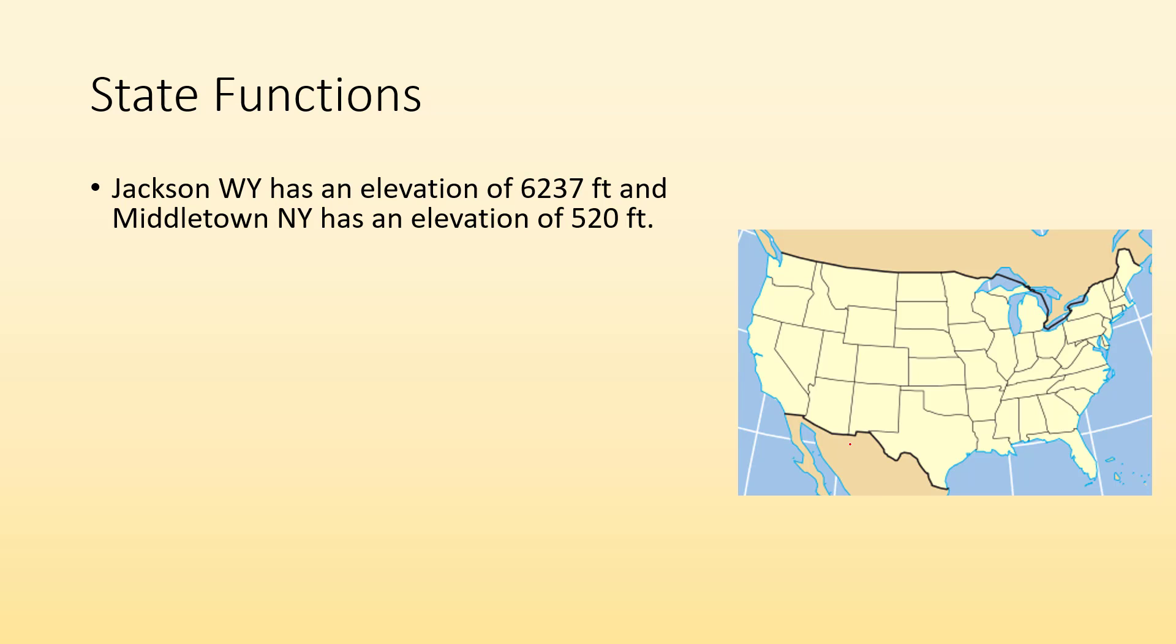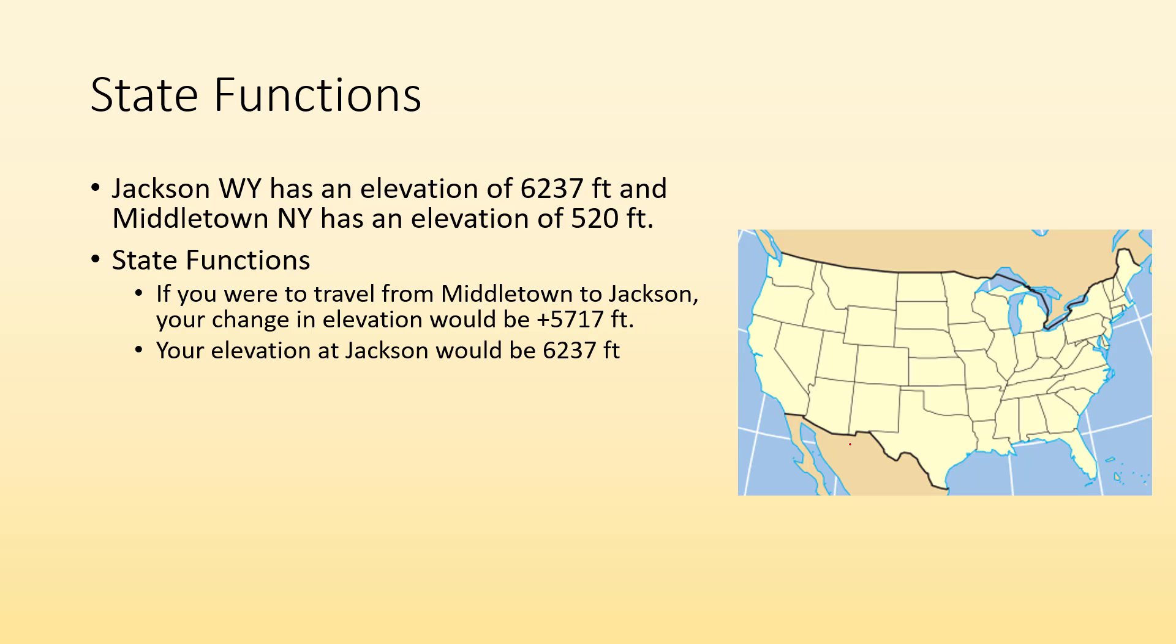So some other examples. Jackson, Wyoming, one of my favorite places, has an elevation of 6,237 feet above sea level. And Middletown, New York, I guess also one of my favorite places, but I'd rather be in Jackson. Anyway, has an elevation of 520 feet. So state functions based on this information. Well, if I were traveling from Middletown to Jackson, my change in elevation would be a plus 5,717 feet. That is a state function. It doesn't matter how I get there. The difference between my starting elevation and my ending elevation is a state function. My elevation at Jackson would be a state function. It doesn't matter how I got there. That's what my elevation is. It only matters that that's where I'm at. Same thing with my elevation in Middletown. It doesn't matter how I got to Middletown. My elevation of 520 feet only depends on where I'm at.